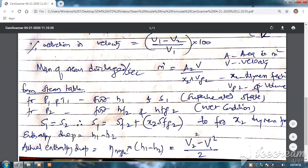So you can find out the enthalpy drop, and the actual entropy drop will be the efficiency, that is coefficient or efficiency, into delta h, that is h1 minus h2. That is equal to v2 square, that is exit velocity square, minus v1 square, that is inlet velocity square, divided by 2.